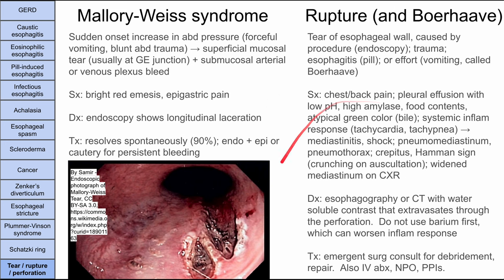This is a severe condition. Diagnosis is made with esophagography or CT using water-soluble contrast — not barium, because if there is a rupture, barium leaking into the mediastinum worsens the inflammatory response. Treatment is emergent surgery for debridement and repair, IV antibiotics (especially if mediastinitis and shock are present), NPO status (to prevent further contamination of the chest cavity), and PPIs to prevent stomach acid from further damaging the mediastinum.